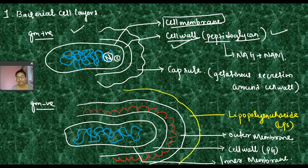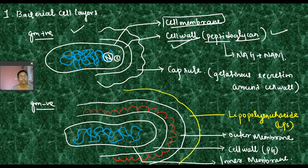If we don't have the carbohydrate part, then we attach the protein chain to the protein chain. Gram-positive bacteria have a very thick layer of peptidoglycan, which is the next layer of the cell wall.